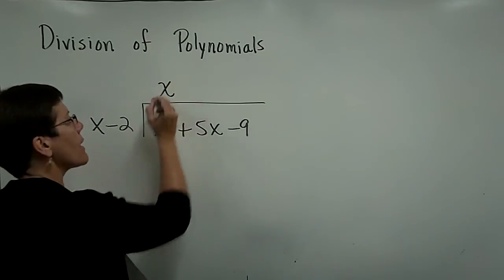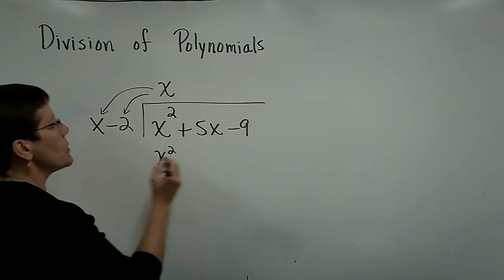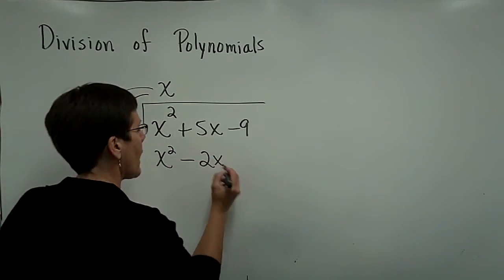And I'll put that x squared down here so I got that. x times a minus 2 is a minus 2x.